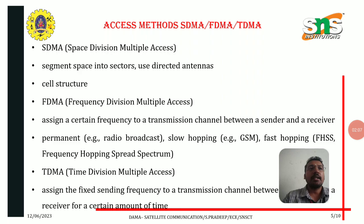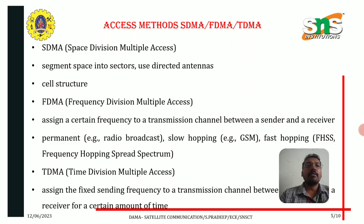Different access methods are SDMA, FDMA, TDMA, and DAMA. SDMA, space division multiple access, segments space into sectors using directed antennas, with different cell structures. FDMA, frequency division multiple access, assigns a certain frequency to a transmission channel between a sender and a receiver. Permanent, slow hopping, and fast hopping are the different types of frequency hopping spectrum. TDMA, time division multiple access, assigns a fixed sending frequency to a transmission channel between users and the receiver for a certain amount of time.